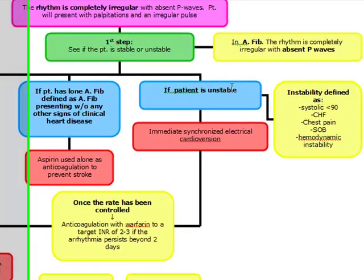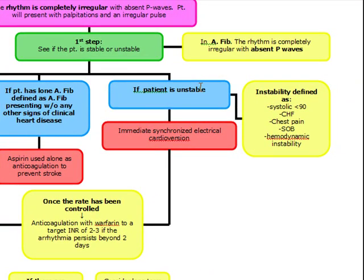If the patient is unstable with AFib, we have to go to immediate synchronized cardioversion. How do we define instability? They're unstable if they have a systolic of less than 90, congestive heart failure, chest pain, shortness of breath, or any type of hemodynamic instability — such as a capillary refill time over 2 seconds. If the patient is unstable, we do an immediate synchronized electrical cardioversion.